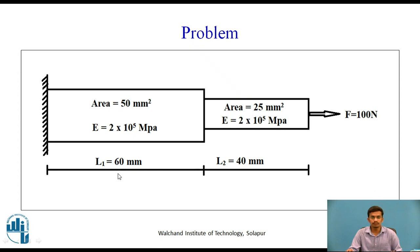We are going to solve this problem in Workbench. We are considering two step bars of length 60 mm and 40 mm. The area of the first bar is 50 mm square and the second bar has an area of 25 mm square. The material properties of the two bars are also given. We are considering uniform material, that is structural steel, with Young's modulus 2 × 10⁵ MPa. One end is fixed supported and from the other end we are applying a tensile force of 100 Newton.